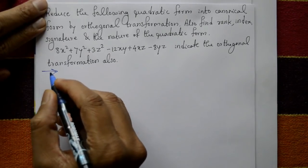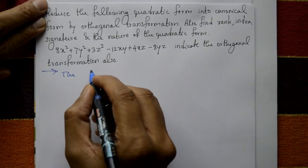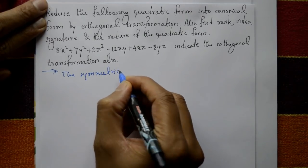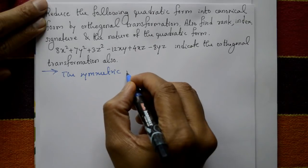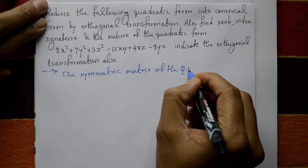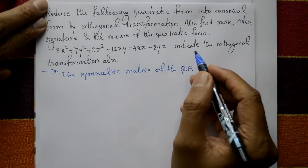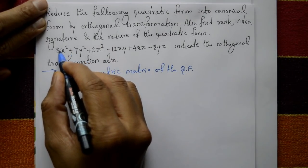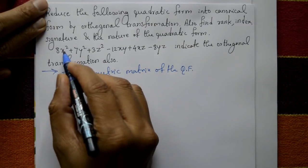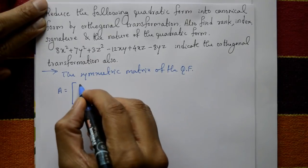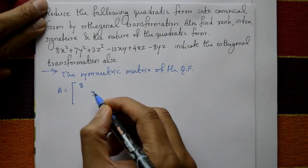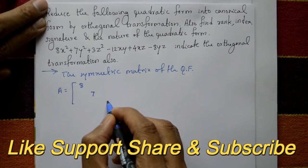Now solution. First, write the symmetric matrix of the quadratic form. A is equal to — write in a symmetric matrix. Coefficient of x² is 8. Coefficient of y² is 7. Coefficient of z² is 3.